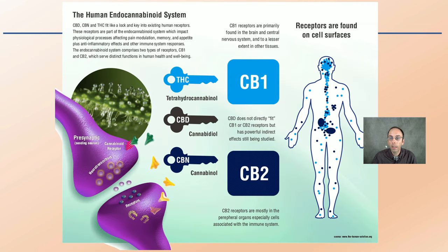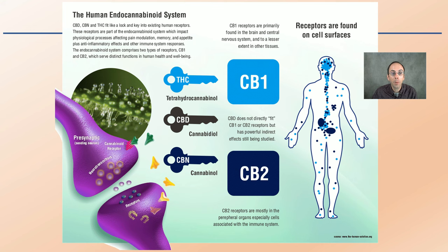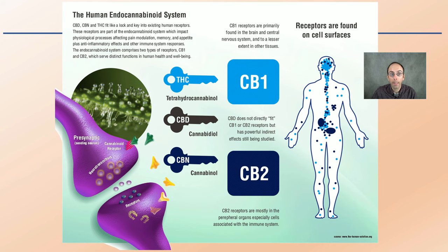Tying this all together with another graphic looking at the human endocannabinoid system — THC, CBD, and CBN — we are talking at the neurotransmitter level, and how these chemicals interact with both the brain and the immune system. This is a very complex system, and hopefully with more research we'll be able to understand it even better.